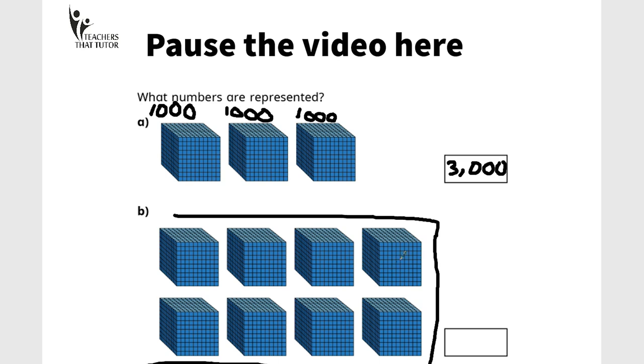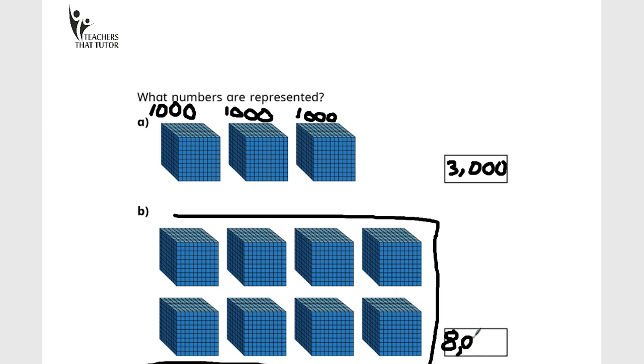So 1,000, 2,000, 3,000, 4,000, 5,000, 6,000, 7,000, 8,000 was the correct answer. How did you get on? Did you get it?